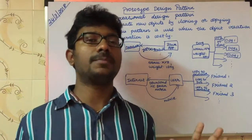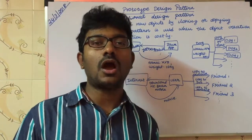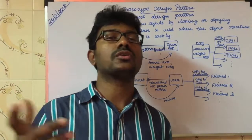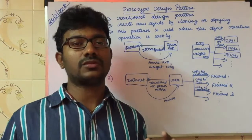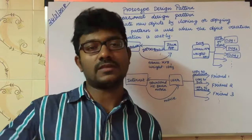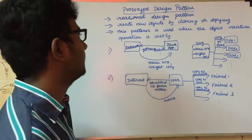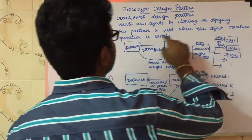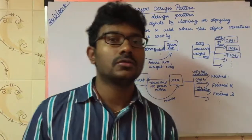Cloning is similar to copying. So if you have an object and you need that object 100 times, you have to clone or copy it. But creating an object from scratch each time is a costly computation, so we use this pattern when object creation is expensive.